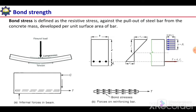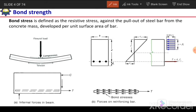In the case of a beam, let's consider a simply supported beam subjected to a point load. Under the application of this load, the beam will bend in the downward direction. At the top there will be compression and at the bottom there will be tension. If we take a section at any location, the stress profile or the strain profile of that beam will look like this. From the strain profile we can calculate the stress profile as well.